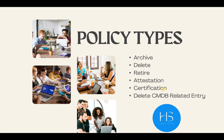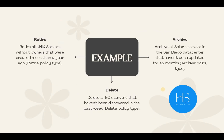Here are some more examples of CMDB Data Manager. For retire, you can give a condition: retire all unique servers without owners that were created more than a year ago. For archiving: archive all Solaris servers in the San Diego data center that haven't been updated in the last six months. For deletion: delete all EC2 servers that haven't been discovered in the past week.